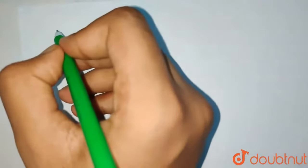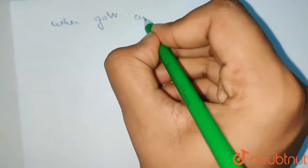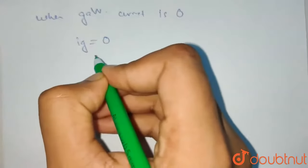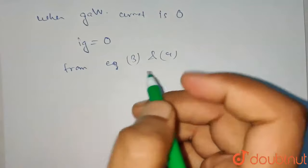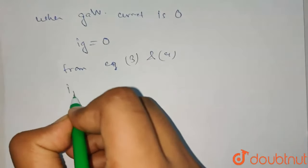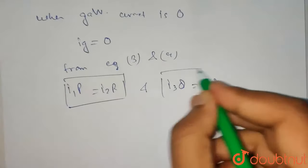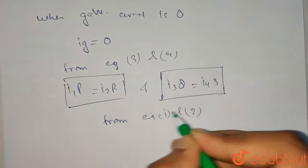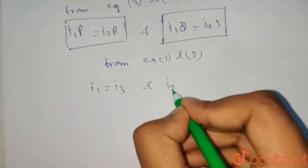For the next part, when galvanometer current is zero, IG equals 0. From equation 3 and 4 which we have from Kirchhoff's voltage law, I1P equals I2R and I3Q equals I4S. But from equation 1 and 2, we know I1 equals I3 and I2 equals I4.